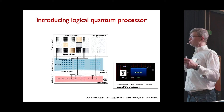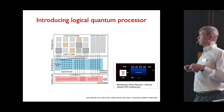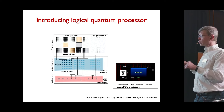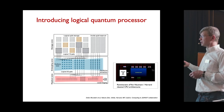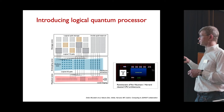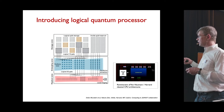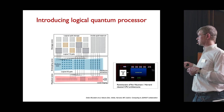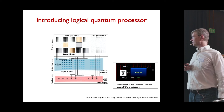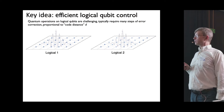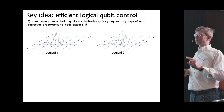All of this resulted in a logical quantum processor with different zones: a storage zone, an entangling zone where atoms can be entangled in parallel by exciting them into Rydberg states, and a readout zone. Looking at it more closely, it starts resembling a real processor — somewhat reminiscent of the von Neumann or Harvard classical CPU architecture. The key idea and the main takeaway is efficient control over logical rather than physical qubits.